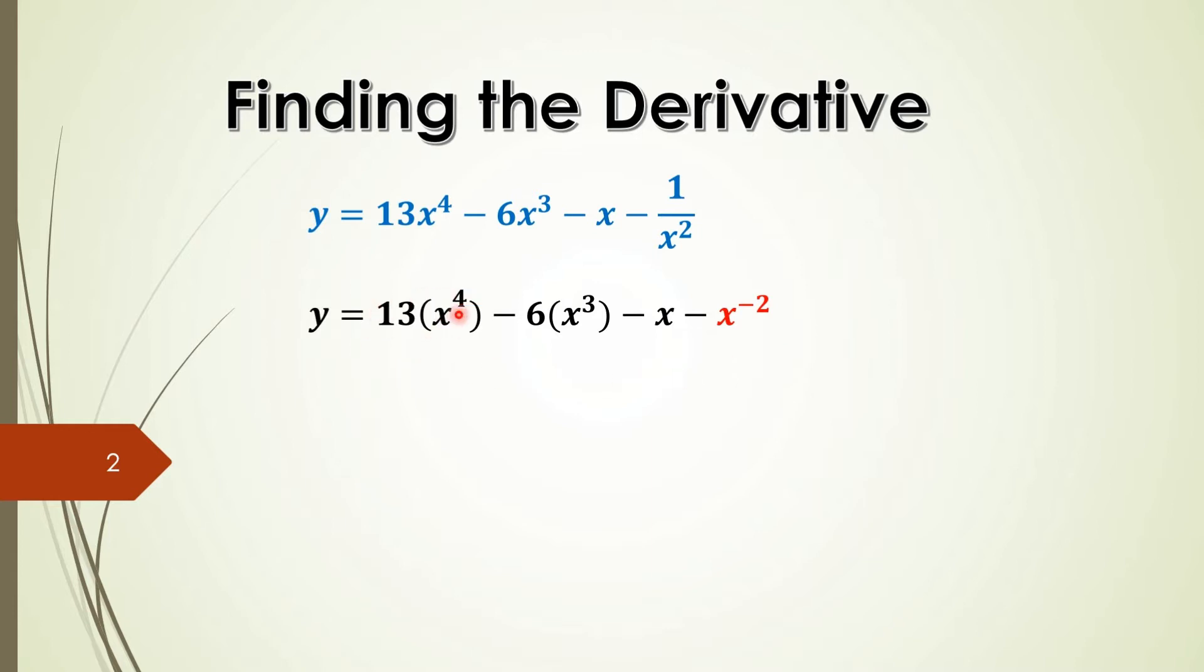And again, you multiply by the power, you reduce the power by 1. You multiply the term by the power, so that's 4 times 13, which will give you 52. Let's go and look at that.